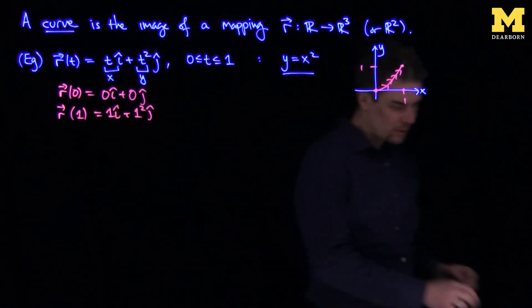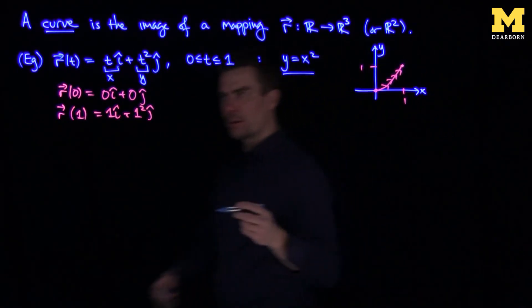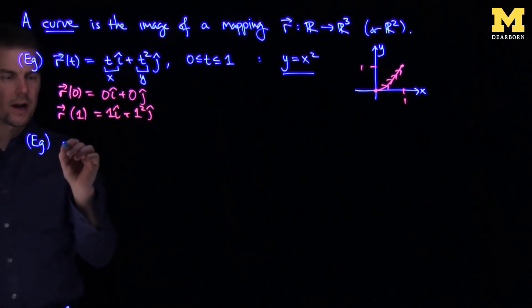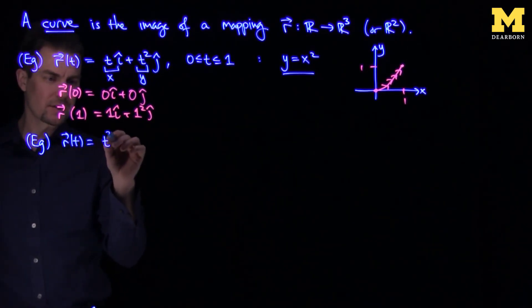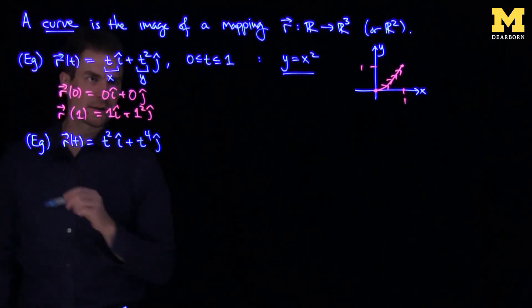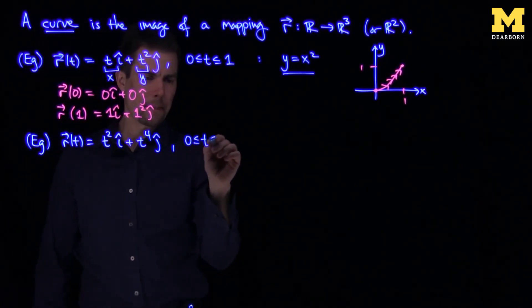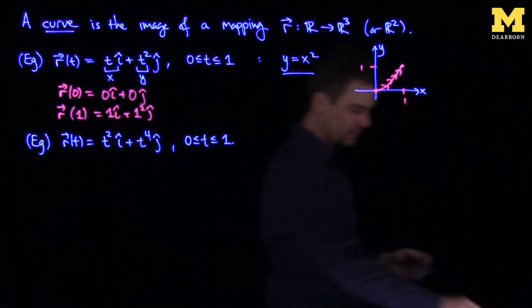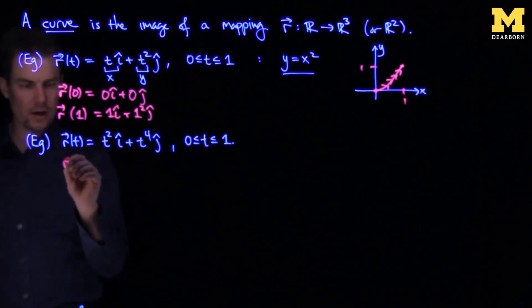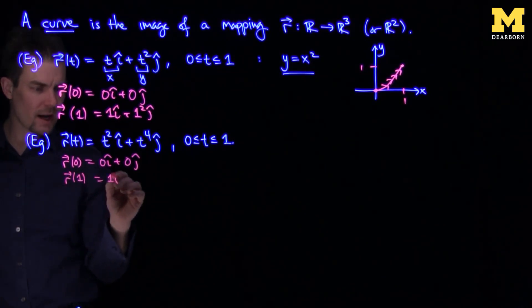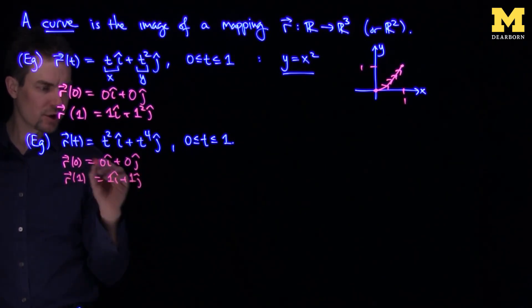Now curves are interesting because we can reparametrize them. I could, for example, write down another curve. I could write down R of t is t-squared i-hat plus t to the fourth j-hat, for t between 0 and 1. And now, likewise, we can conclude from this that R of 0 is 0 i-hat plus 0 j-hat, and R of 1 is 1 i-hat plus 1 j-hat.